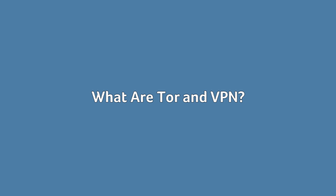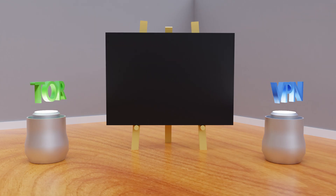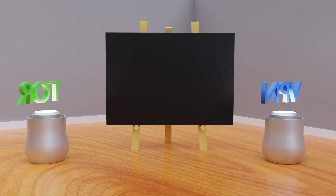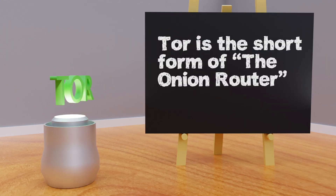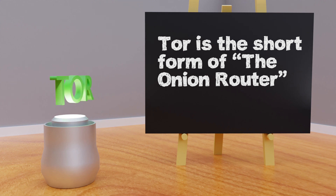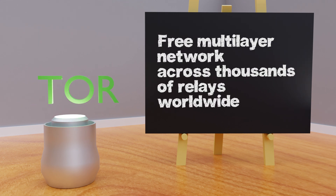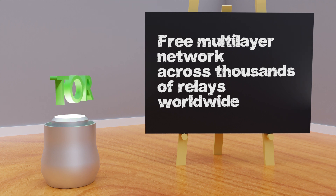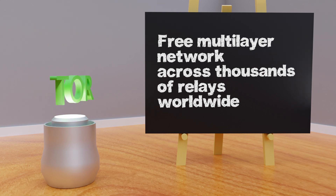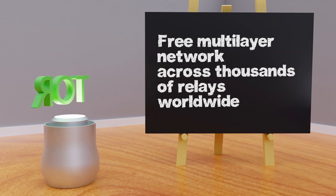What are Tor and VPN? To know the key differences between Tor Onion and VPN, it is important to gain an understanding of their definitions. Tor is a short form of the Onion Router, which is a free multi-layer network spread across thousands of relays worldwide managed by volunteers. Instead of accessing web traffic directly through your client device from a web server, it is channeled through various anonymous relay nodes on the Tor browser.